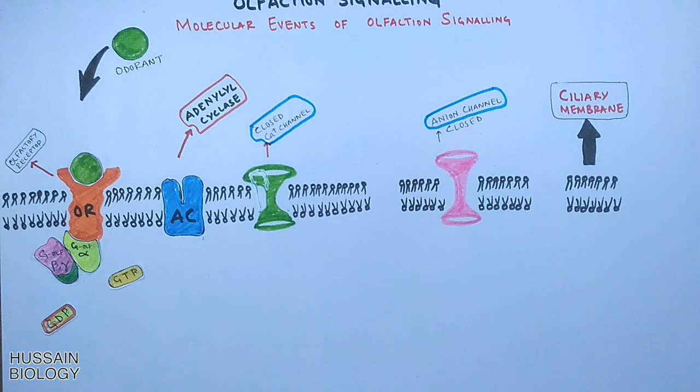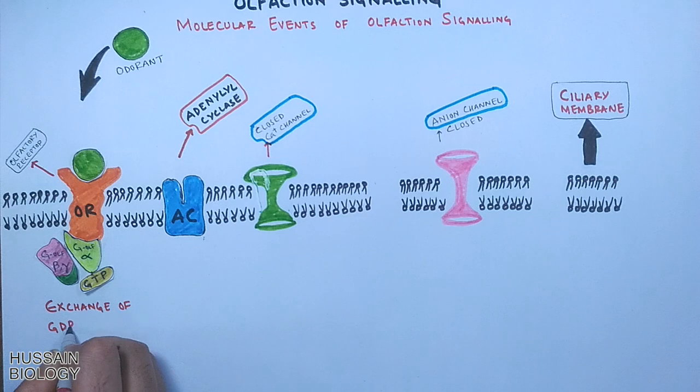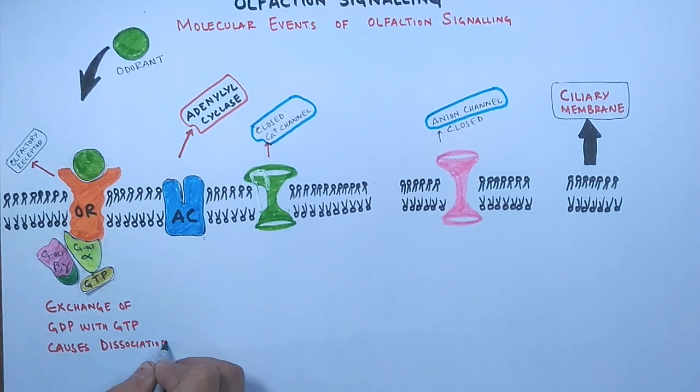The binding of GTP to the G protein causes the dissociation of the G alpha subunit from the G beta-gamma subunit.